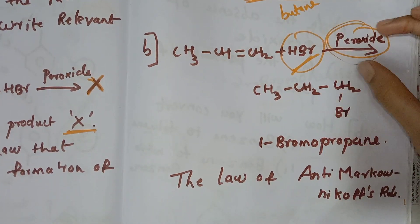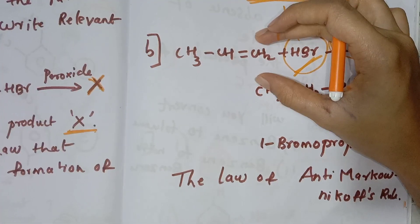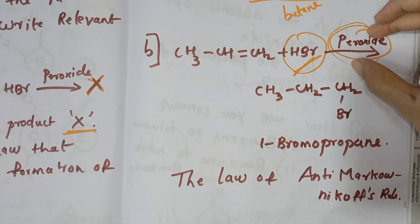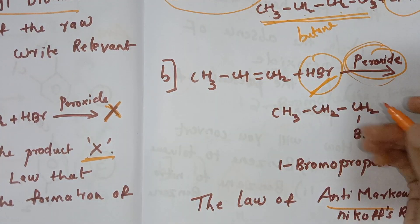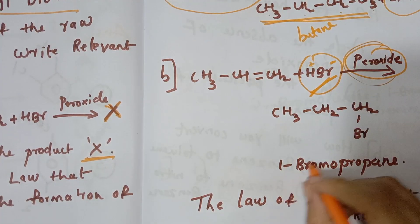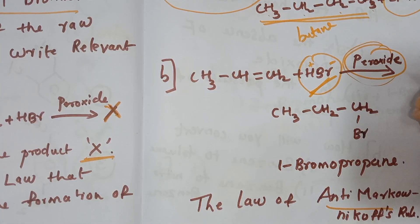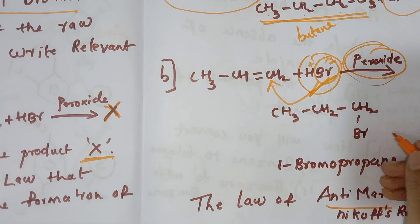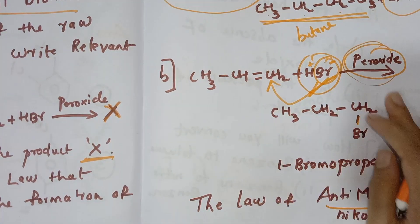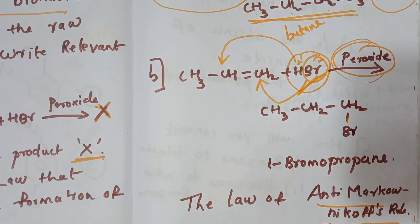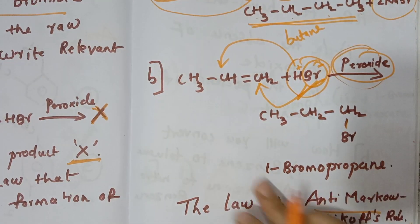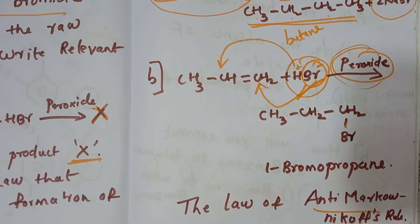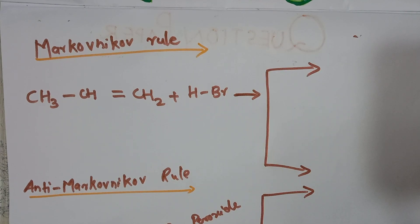In the presence of HBr and peroxide, we apply the Anti-Markovnikov rule. The Anti-Markovnikov rule states that when HBr adds to an alkene in the presence of peroxide, the bromine adds to the carbon with fewer hydrogen atoms — the opposite of the Markovnikov rule.